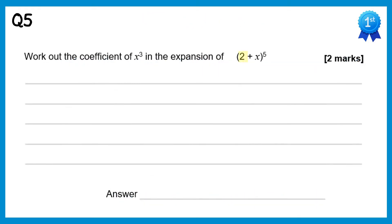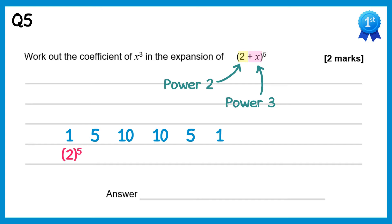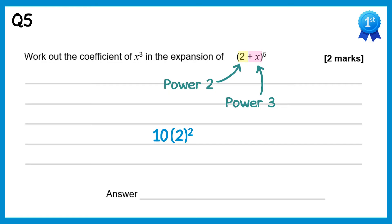In this question the value of a is 2 and b is x, and we want the coefficient of x cubed. To get the term in x cubed we take b to the power 3 and therefore a to the power 2, since 3 plus 2 must equal 5. The bracket is to the power 5 so we need the fifth row of Pascal's triangle. The relevant coefficient is 10 — corresponding to 2 squared — so we need 10 lots of 2 to the power 2 times x to the power 3. Simplifying: 2 squared is 4, so it's 40x cubed, meaning the coefficient of x cubed is 40.